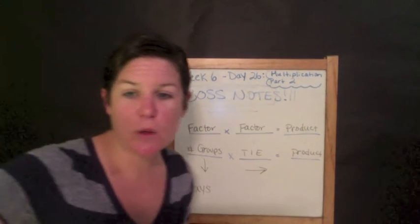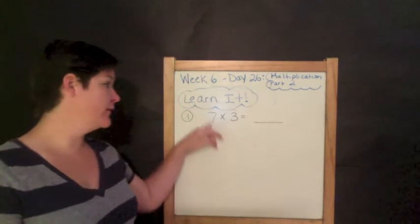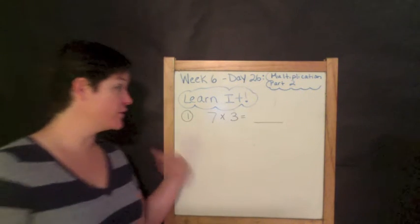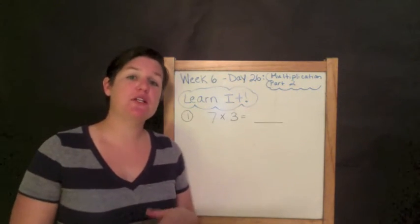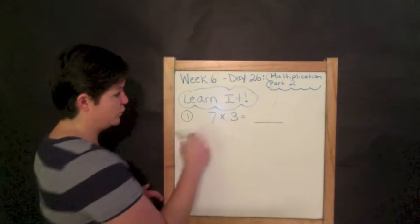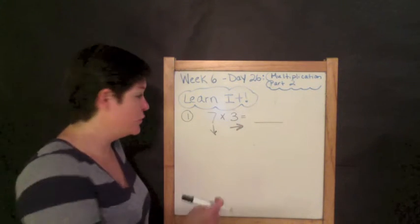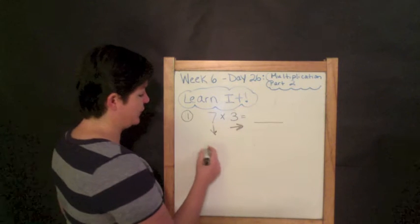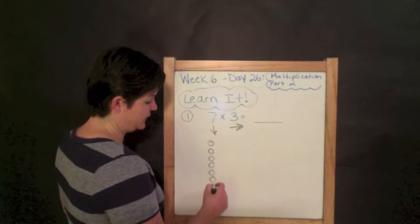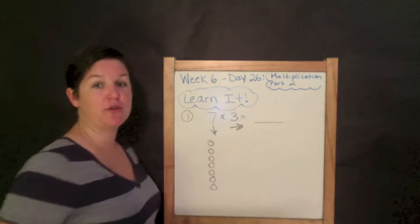So let's take a look at our first problem. Down to the right, down to the right. So here we go with example one. Now last week we learned that the first number is our groups and then things in each. So last week we would have drawn seven circles with three in each. This time I'm going to show you a different strategy to get the same answer. This week we are practicing going down to the right. So we're going to draw seven circles going down: one, two, three, four, five, six, seven circles going down. And now we're going to make sure we have three circles going to the right.